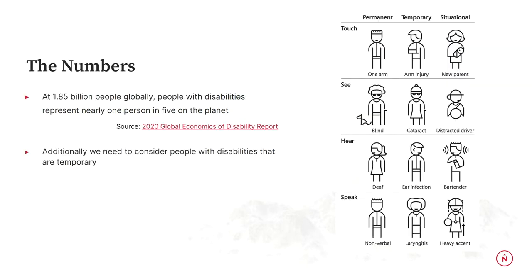Next, the numbers. About two billion people globally identify with having some sort of disability — that's nearly one in every five people. We also need to consider people with disabilities that might not be something they're living with all the time: it could be a temporary disability or a situational disability. For example, on the hearing line: a permanent hearing disability would be someone who is deaf; a temporary one could be someone with an ear infection; and situationally, it could be a bartender in a loud environment. In all these situations, the person is not going to be able to hear what's coming from their device.